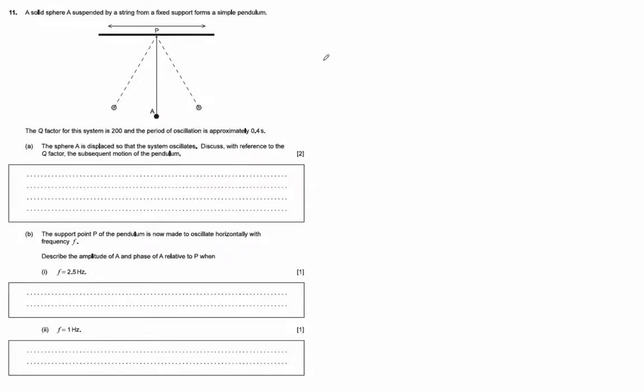A solid sphere A is suspended by a string from a fixed support that forms a simple pendulum. The Q factor is 200, and it says the sphere A is displaced when the system oscillates. Discuss with reference to the Q factor the subsequent motion of the pendulum.